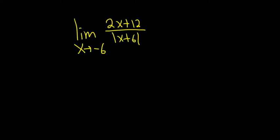Find the limit. If it exists, if it does not exist, explain why. Solution. So if you plug in negative 6 right away you see that it fails because you get 0 on the bottom. So maybe the first thing we can do is the obvious thing, which is factor out a 2 from the numerator. So 2 parentheses x plus 6 over the absolute value of x plus 6.